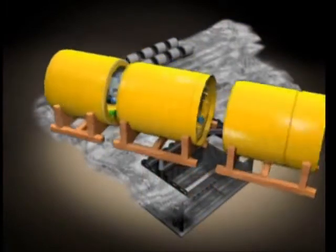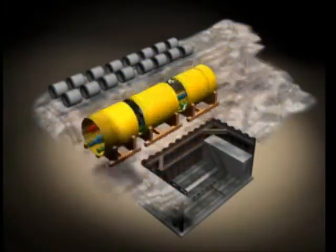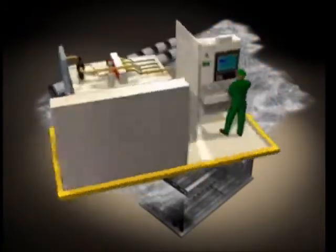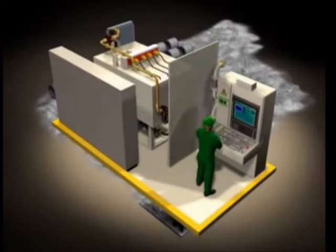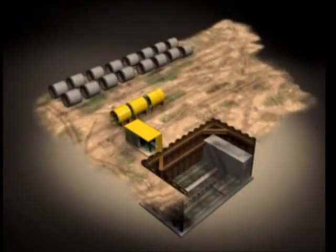The tunneling machine is delivered to the site in separate modules for easy handling. The container with the operator control panel and the hydraulic power pack for the jacking station is located in front of the start shaft such that the machine operator has eye contact with the jacking station.